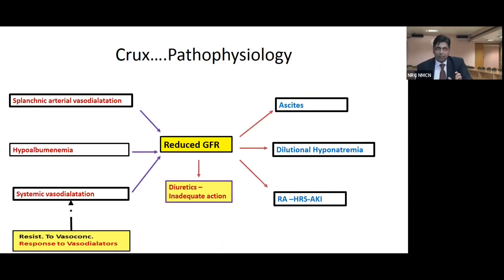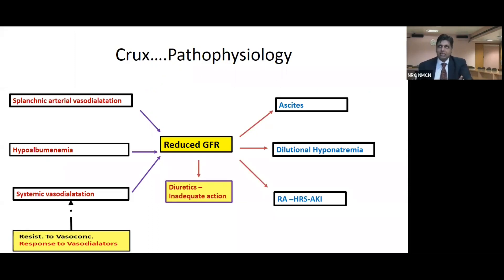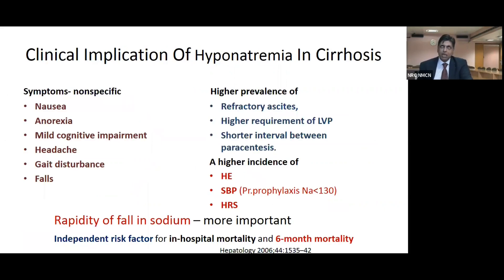In summary, the pathophysiology of reduced GFR is related to splanchnic arterial vasodilatation, hypoalbuminemia, and systemic vasodilatation. Reduced GFR leads to inadequate action of diuretics, which are therefore often stopped, worsening ascites, dilutional hyponatremia, and potentially progressing to HRS-AKI. Clinical implications of hyponatremia include high prevalence of refractory ascites, higher requirement of LVP, shorter intervals between paracentesis, and higher incidence of hepatic encephalopathy, SBP, and hepatorenal syndrome.